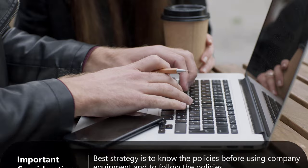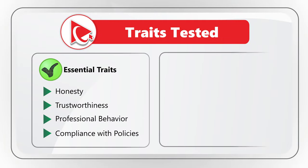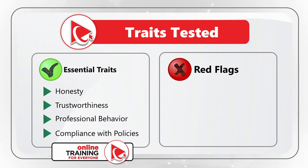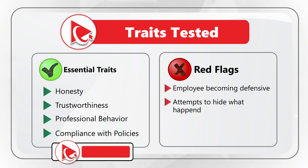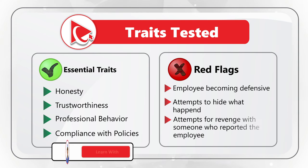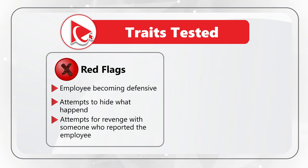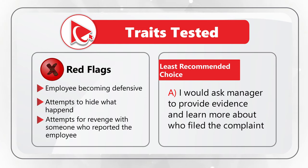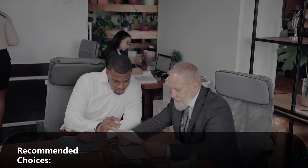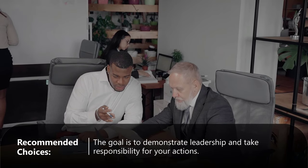The best strategy is to know the policies before using company equipment and to follow those policies. Based on the listed answers, there are certain red flags: the employee becoming defensive, attempting to hide what happened, or attempting revenge against whoever reported them. Based on these red flags, the least recommended answer is Choice A — asking the manager to provide evidence and learn more about who filed the complaint.